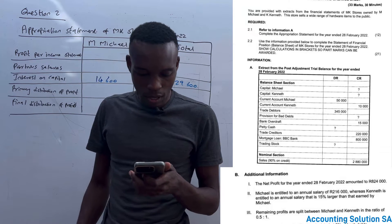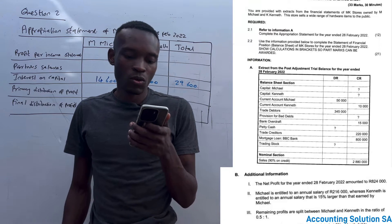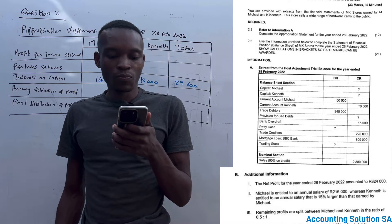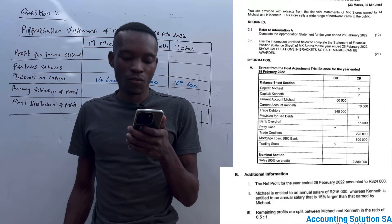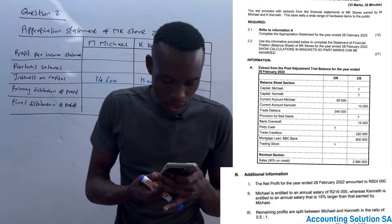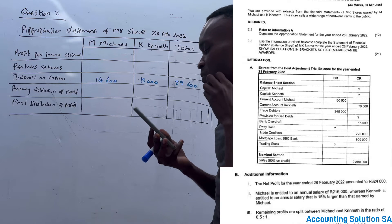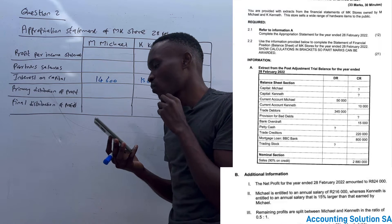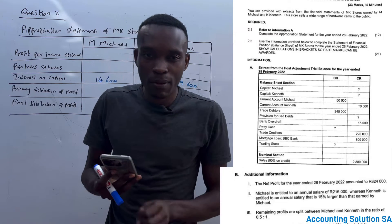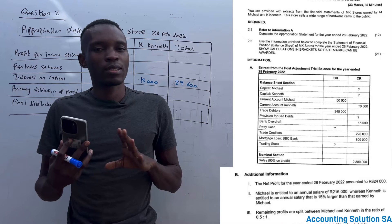Let's check the question paper that we have. You are provided with an extract from the financial statements of MK Store, owned by M. Mitchell and K. Kenneth. This store sells a wider range of hardware items to the public. It is required — question 2.1 — you need to complete the appropriation statement for the year ended 28 February 2022.